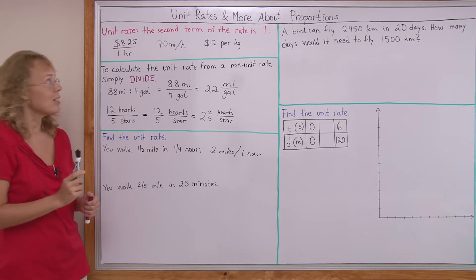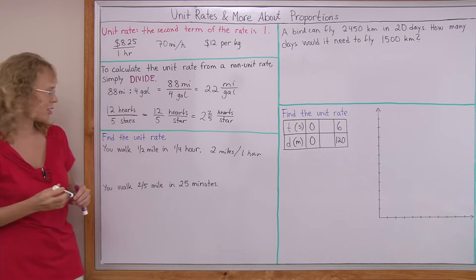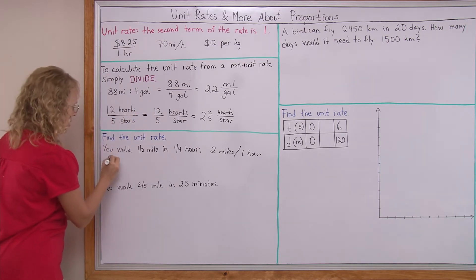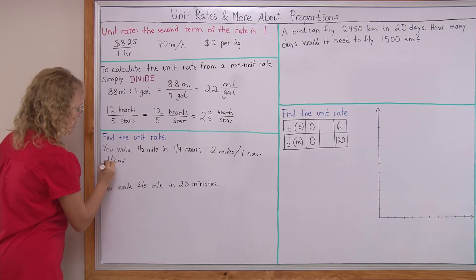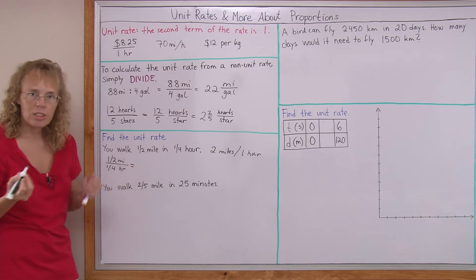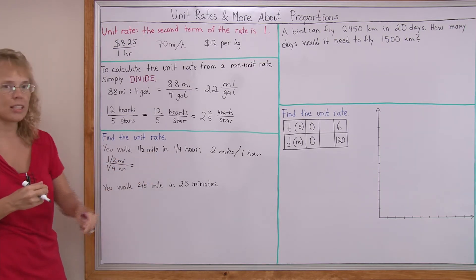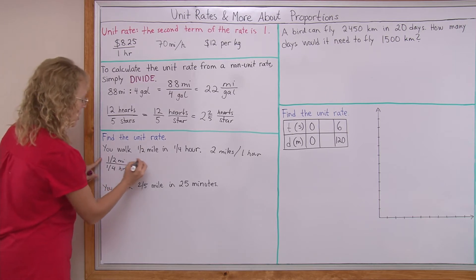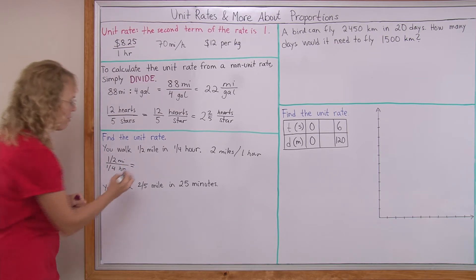We just figured it out. But I want to also show you that the division still works. If I write it as half a mile per one-fourth of an hour, I can still use division to find the unit rate.